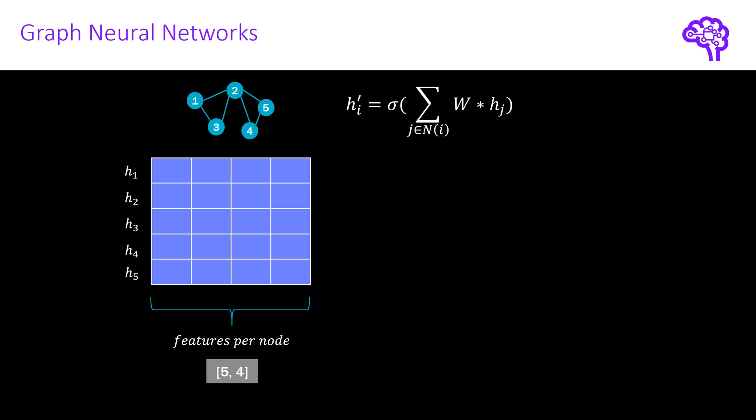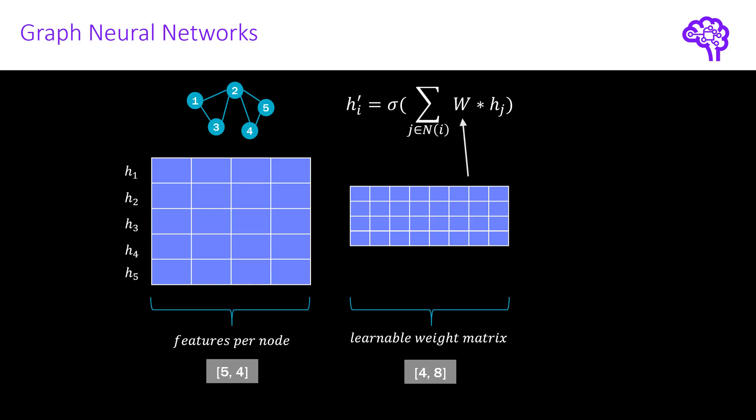First, we transform the node features by multiplying them with a shared weight matrix. This learnable linear transformation converts the node features into higher level features. Essentially, that is where the learning takes place. The weight matrix comes from a fully connected neural network. And in this case, the input would be the shape of our node feature vector, here it's 4, and the output would be the shape of the node embeddings. So here I chose 8, for instance.